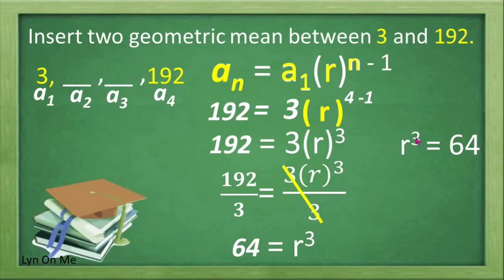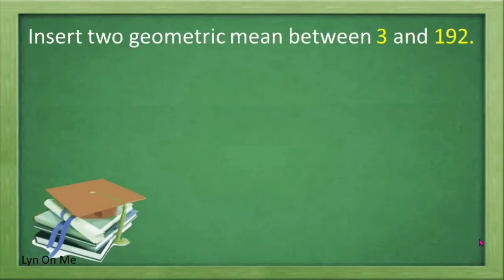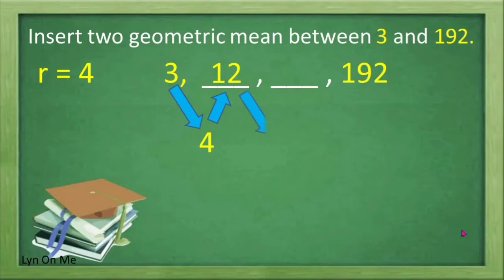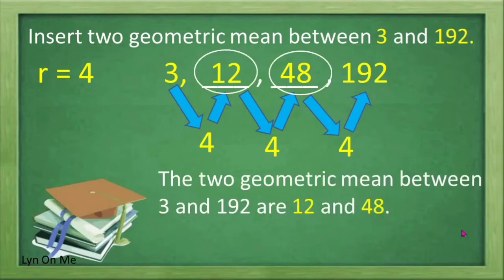To eliminate the exponent 3, we extract the cube root of both sides of the equation. The cube root of r cubed and the cube root of 64 gives us r is equal to 4. We now find the geometric means between 3 and 192 using r equal to 4. We multiply the first term by the common ratio: 3 times 4 equals 12. To get the next term, we multiply 12 by 4 to get 48. If we multiply 48 by 4, that equals 192. Therefore, 12 and 48 are the geometric means of 3 and 192.